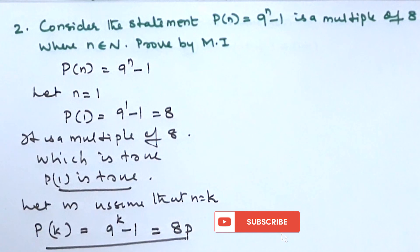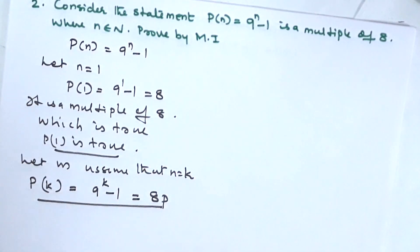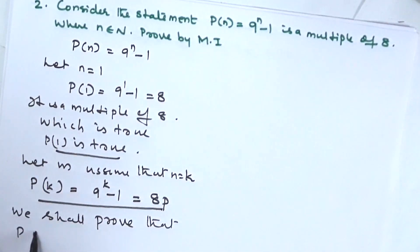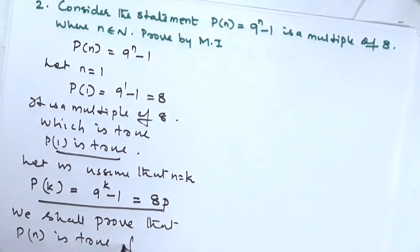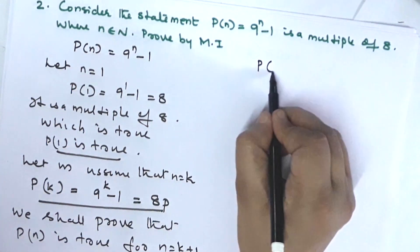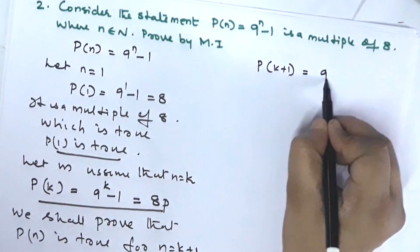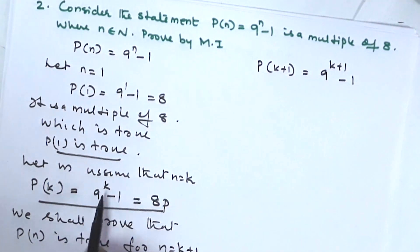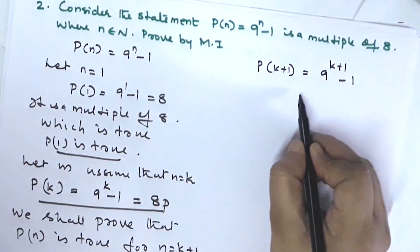This is our leading step. We shall prove that P(n) is true for n equal to k plus 1. P(k+1) = 9^(k+1) − 1. From the leading step, 9^k − 1 = 8p, so 9^k = 8p + 1. We shall prove that 9^(k+1) − 1 is a multiple of 8.